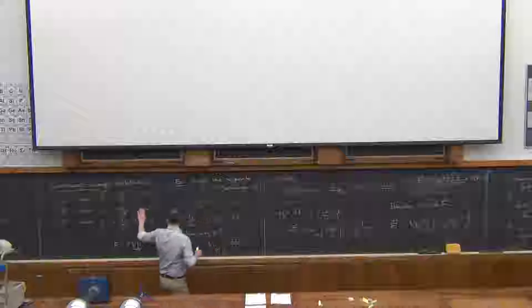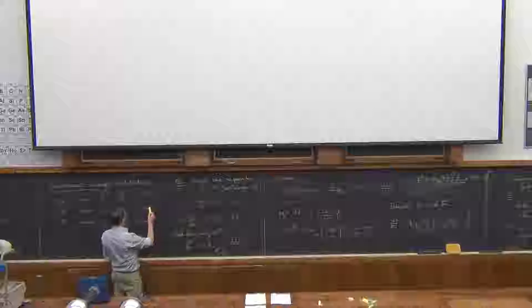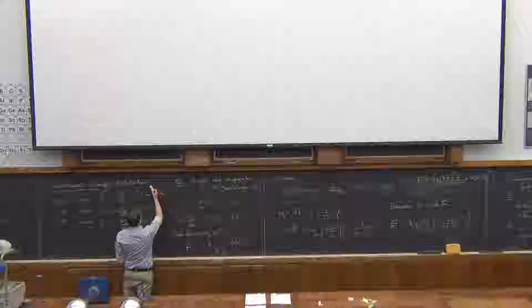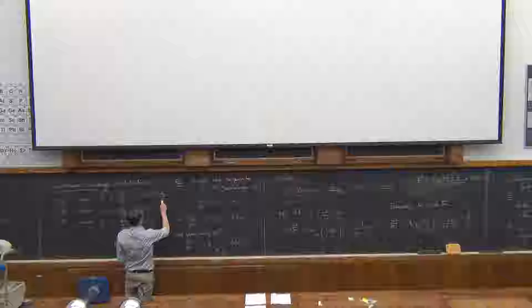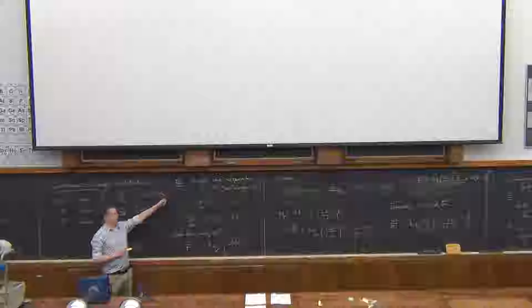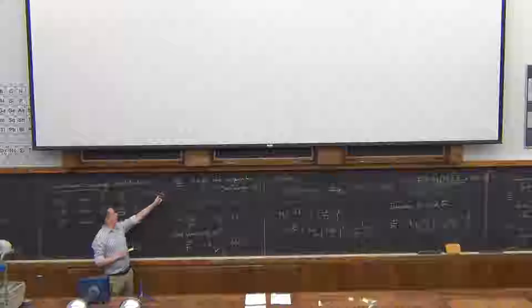We talked about one-, two-, and three-dimensional charge distributions. Very often they will be constant. If I tell you I've got a line of charge that has a total charge plus Q on it, and its total length is L, and I tell you it's uniform, then the total charge over the total length is the charge density, right?